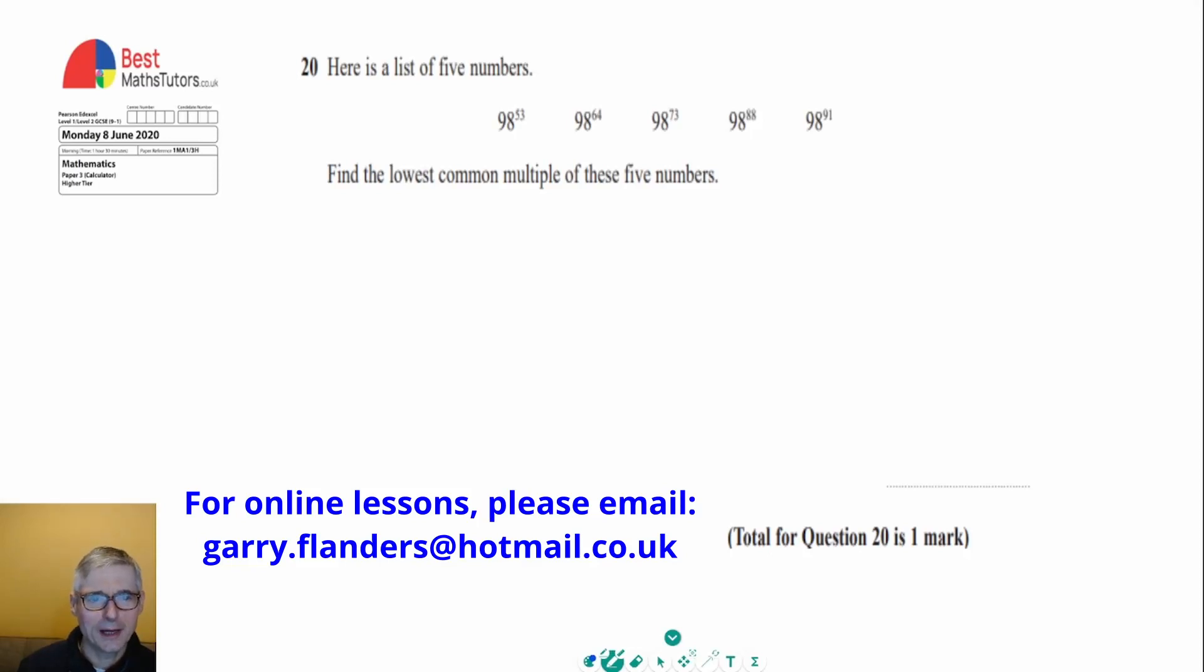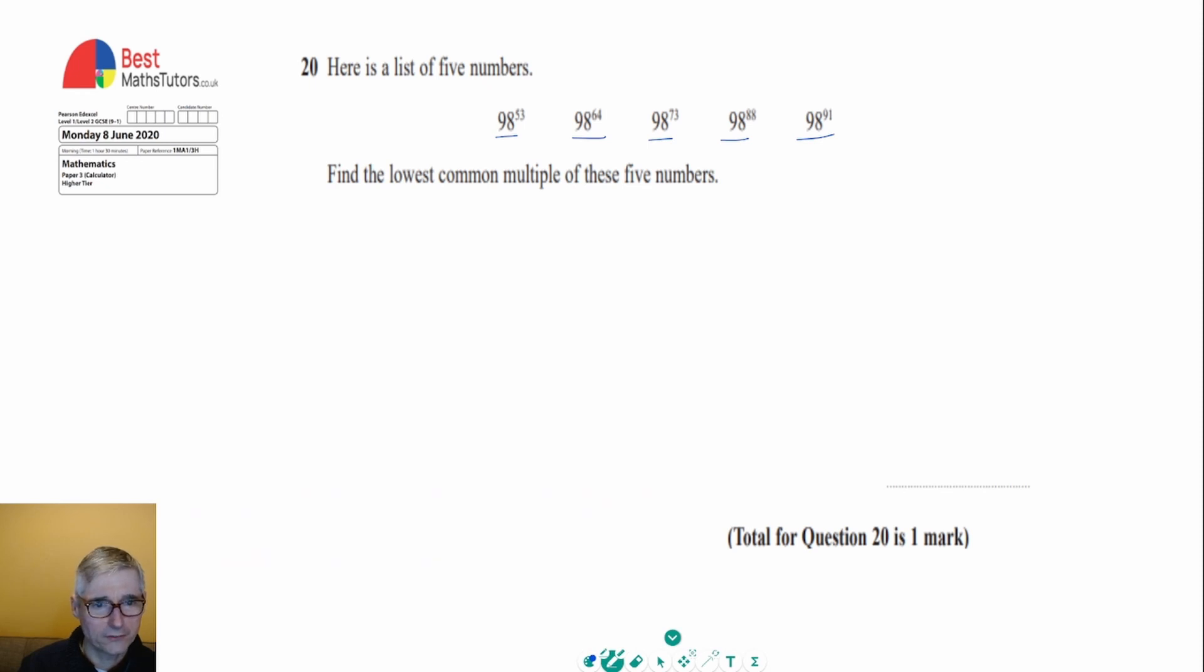This is question 20 about lowest common multiples. We've got a list of five numbers, all written with quite high powers, and we need to find the lowest common multiple. The lowest common multiple means it's a number that all of these will go into, and it could actually be one of these numbers themselves that all the rest might go into.